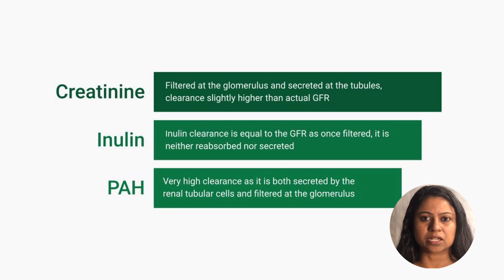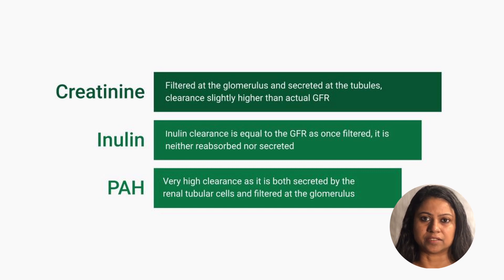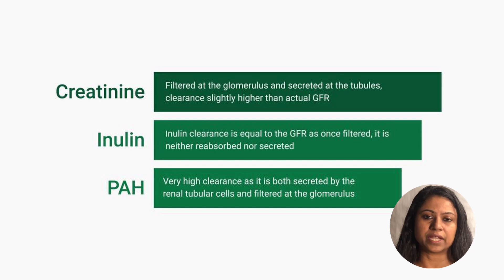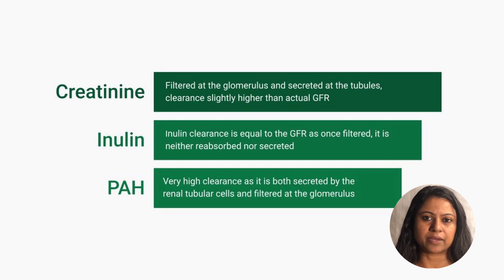Let's look at the renal clearance of three important products that are tested often in the USMLE: creatinine, inulin, and PAH (para-aminohippuric acid), which is an organic acid. Creatinine is not only freely filtered at the glomerulus but is slightly secreted at the tubules as well, so creatinine clearance is always going to be slightly higher than the GFR. Inulin clearance equals the actual GFR because inulin is only filtered at the glomerulus — it is neither reabsorbed nor actively secreted by the tubules. PAH and other organic acids have the highest renal clearances because they are not only filtered at the glomerulus but are highly secreted at the tubules as well.